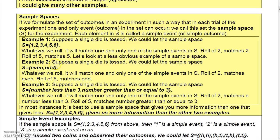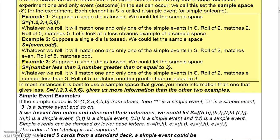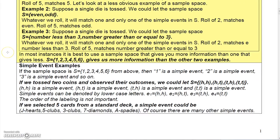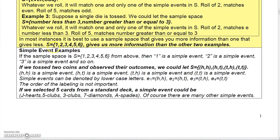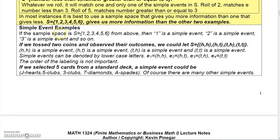We might have a less obvious sample space. We could say the sample space is going to be even or odd, but that doesn't give as much information as listing all six possibilities. Or you could do something like say the sample space consists of all numbers less than three and all numbers greater than or equal to three. But again, in most instances it's best to use the full sample space if you're going to roll a die. One would be a simple event, two would be a simple event, three would be a simple event, and so forth.